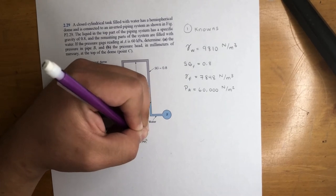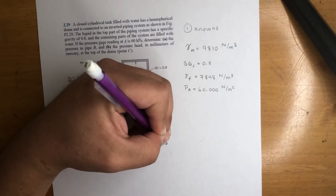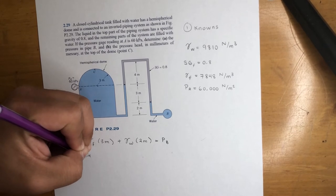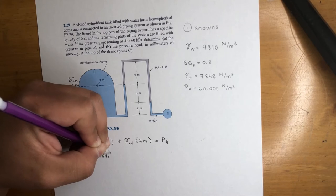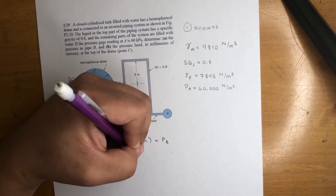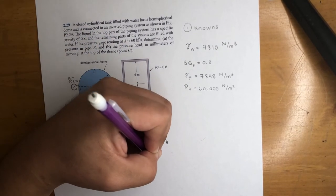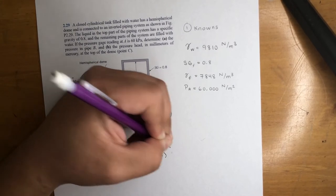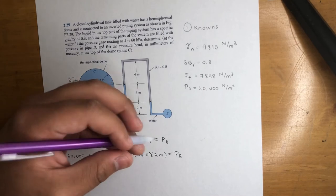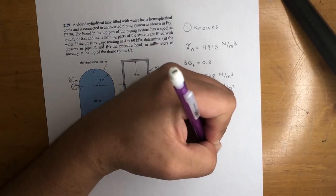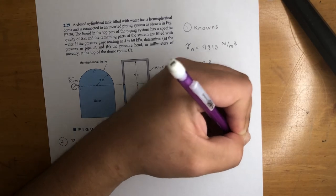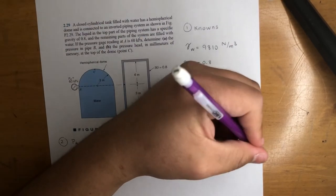Let's plug and chug. We got 60,000 plus 7848 (gamma fluid) times three meters plus 9810 (the gamma of water) times two meters equals PB. If you do the math, PB is equal to 103,164 pascals.